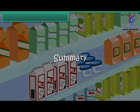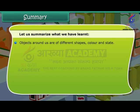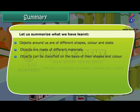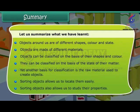Let us summarize what we have learned. Objects around us are of different shapes, colors, and states. Objects are made of different materials. Objects can be classified on the basis of their shapes and color, on the basis of the state of their matter, or on the basis of the raw material used to create them. Sorting objects allows us to locate them easily and also allows us to study their properties.